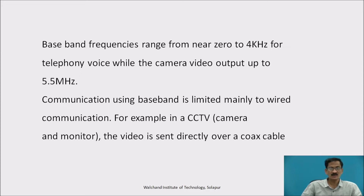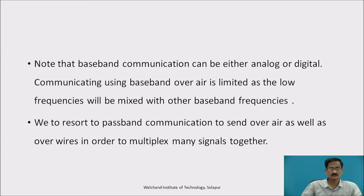For example, in a CCTV camera and monitor, the video is sent directly over a coaxial cable. Note that baseband communication can be either analog or digital. Communicating using baseband over air is limited, as the low frequencies will be mixed with other baseband frequencies. We resort to passband communication to send over air as well as over wires in order to multiplex many signals together.